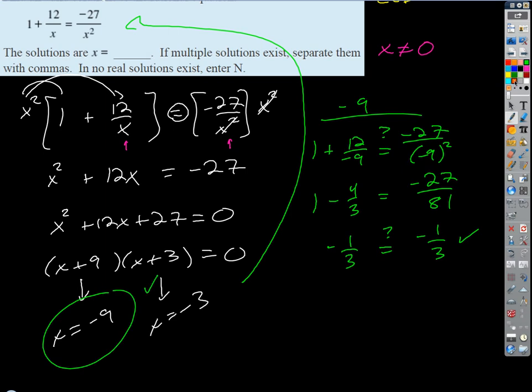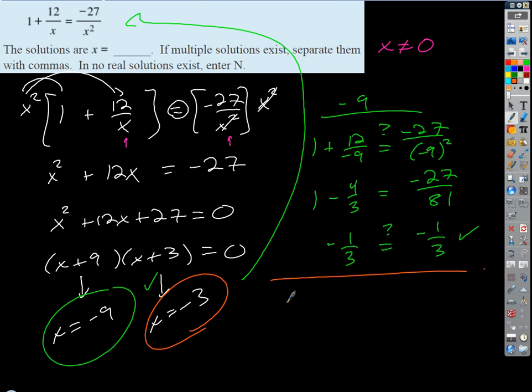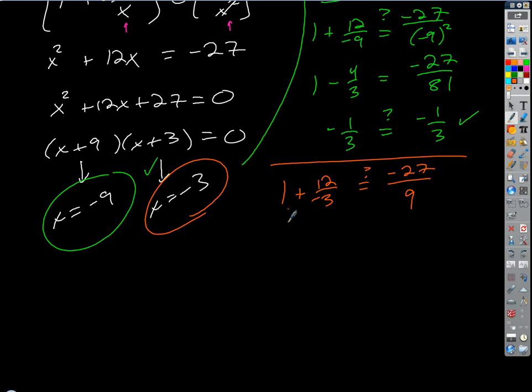What about negative 3? We'll check that one. If I plug that in I'm going to get 1 plus 12 over negative 3 on the left and on the right I'm going to get negative 27 over negative 3 squared, which is 9. On the left side we get 1 plus negative 4, so negative 3, and on the right side negative 27 over 9 is also negative 3. So that one checks as well. Negative 9 and negative 3 are our solutions.